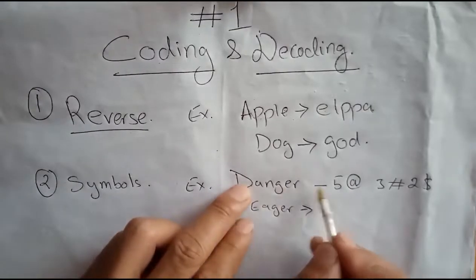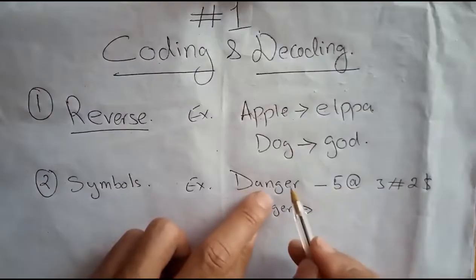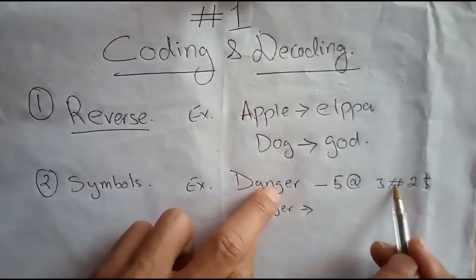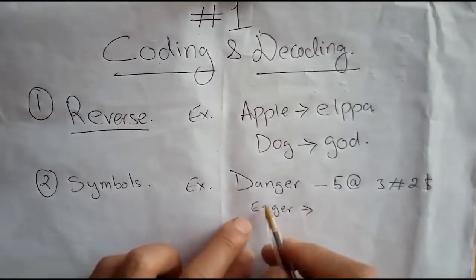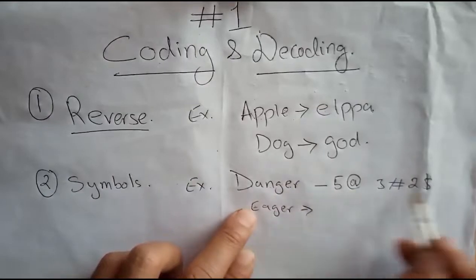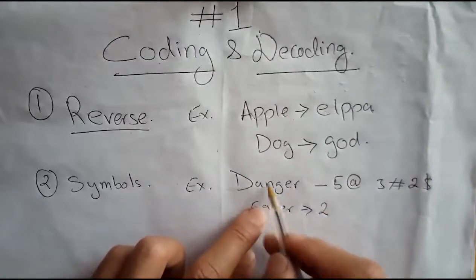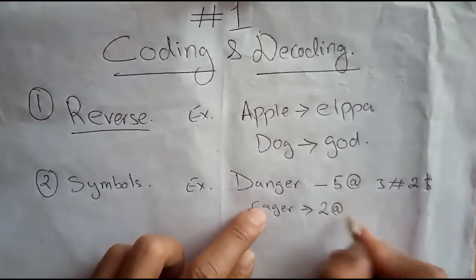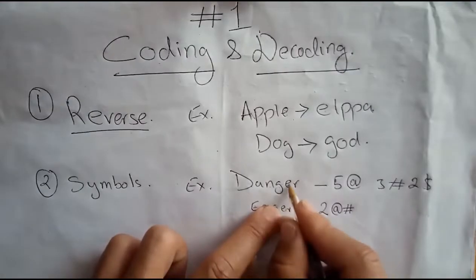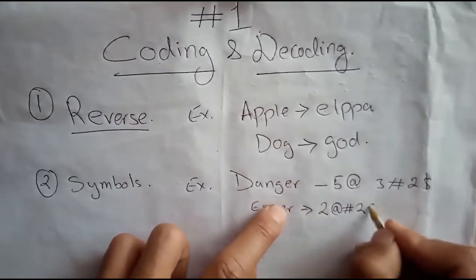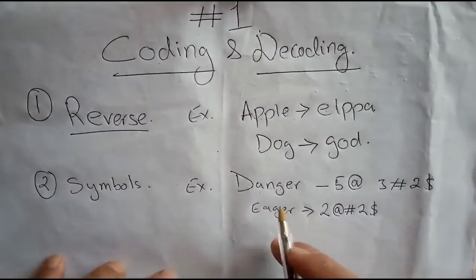We write out D, A, N, G, E, R. D is represented by 5; A is represented by @ (at the rate); N is represented by 3; G is represented by #; E is represented by 2; R is represented by $. So E is coded as 2, giving us the mapping we need for this type of symbol coding.